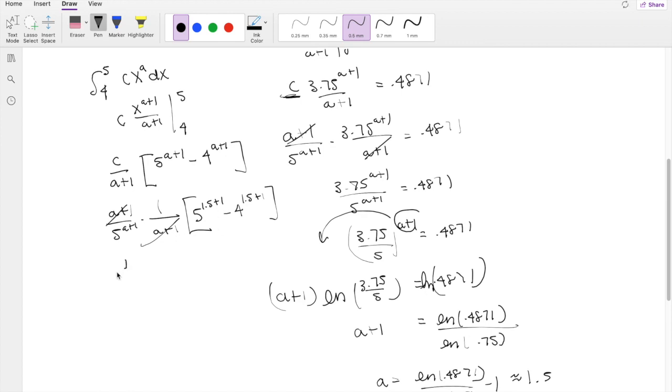So this is equal to 1 over 5. Again, this one, a is 1.5, so we know this is 2.5. 5^2.5 minus 4^2.5.